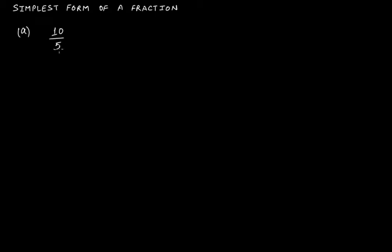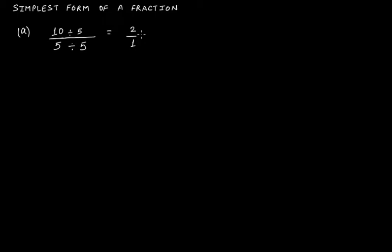The number should be common. So if I divide 10 and 5 by 5, this will be 10 divided by 5 equals 2, and 5 divided by 5 equals 1. So this gives us 2 by 1.